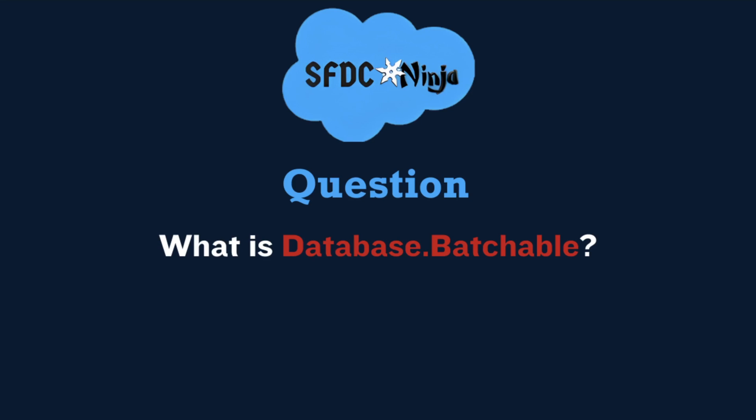We will talk about each method one by one. The start method provides the data to work on — basically it is used to collect records to be passed to the execute method. It returns either a database.queryLocator object or an iterable that contains records. After getting data from the start method, we perform all our operations in the execute method. Finally, in the finish method, we do all post-processing operations like sending an email. The finish method can be left empty, but it is required and must be written in the batch class.